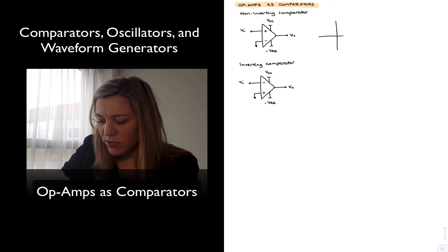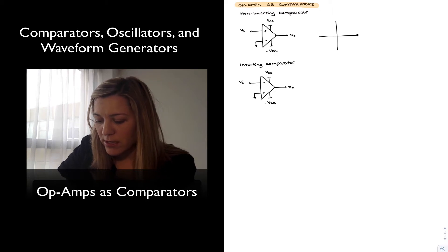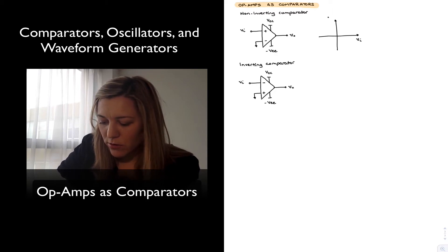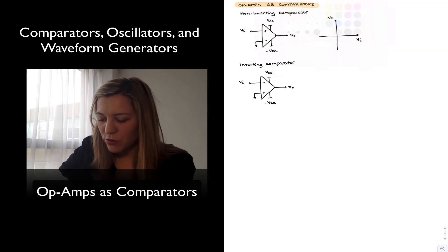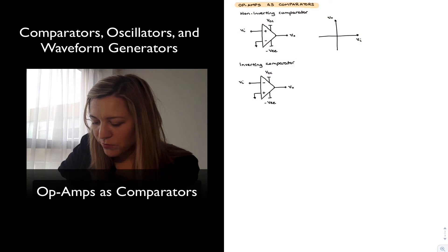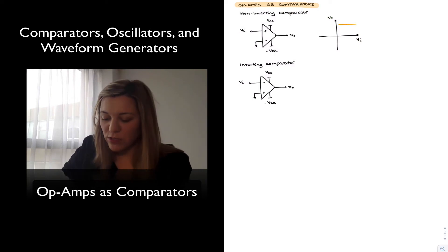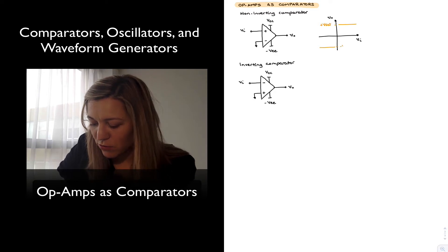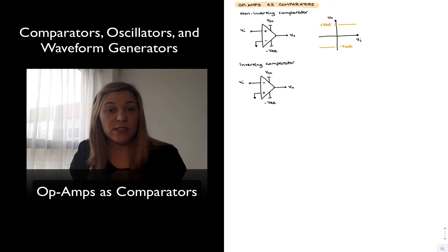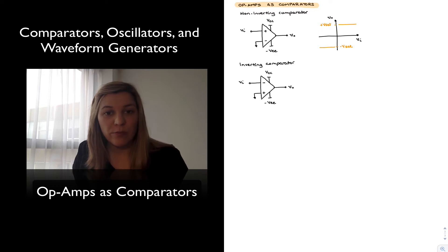If we represent graphically what goes on in that case, we can see that for positive values of input signal, the output is going to equal positive saturation, and for negative values of the input signal, the output will equal the negative saturation voltage — positive saturation and negative saturation. Those levels are going to be within some small range of VCC and negative VEE, or whatever we call the positive and negative supplies powering the op-amp.